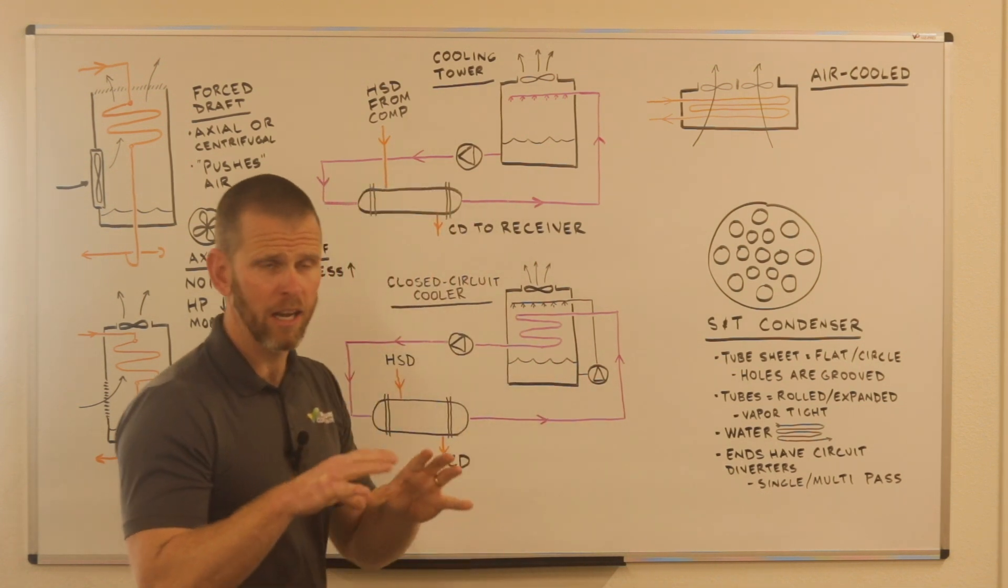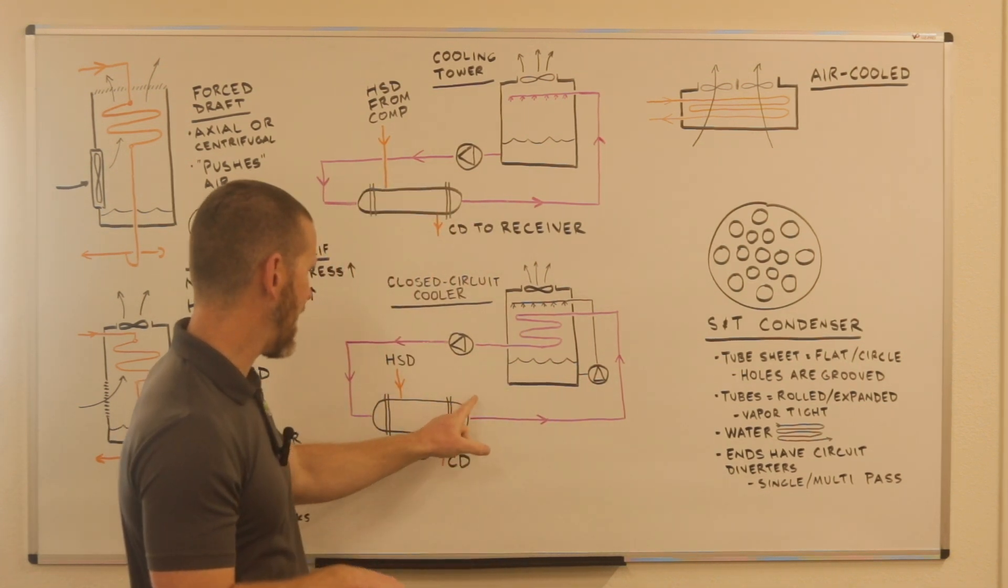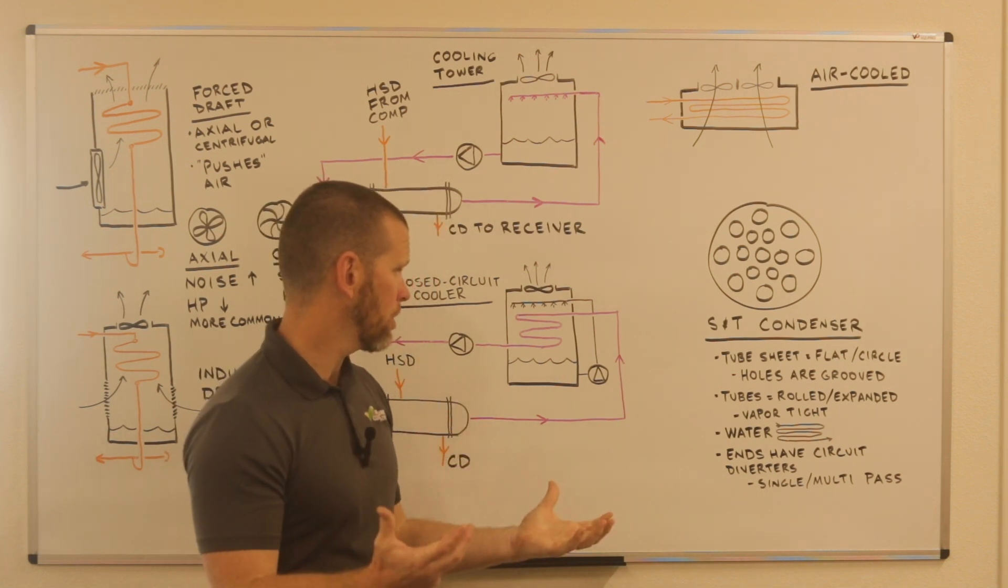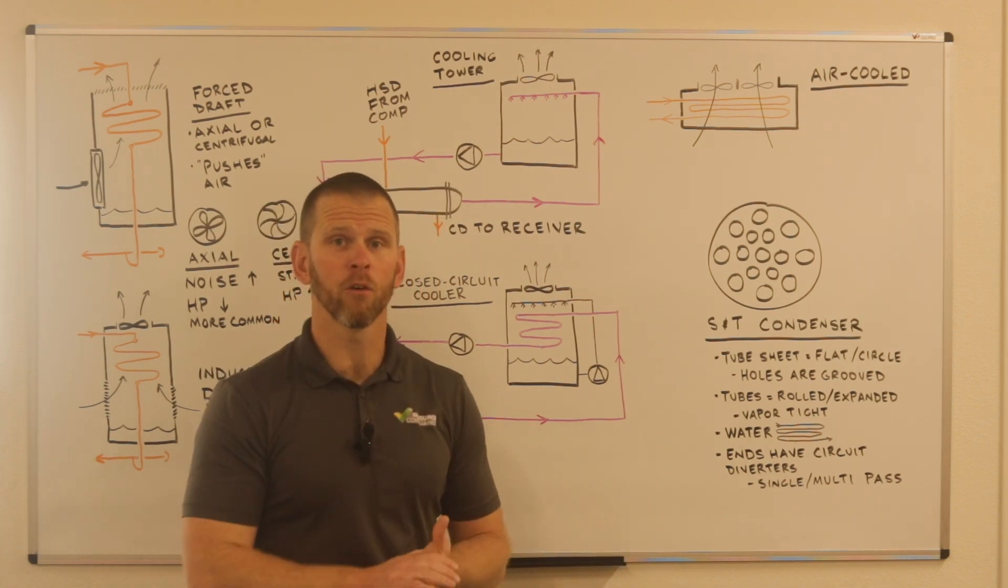At the end of the tubes, at the end of the heat exchanger, which we call the head, that'd be the rounded portion, which we call the heads, there's also going to be circuit diverters. What is a circuit diverter?